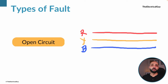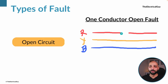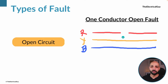Talking about open circuit — let's say we have three phases R, Y, and B, and one of the phases is broken down in between. As a result, the current will not flow beyond that point; it is stopped — it is opened. This is an open circuit fault. Here the R phase is broken down, so out of three one phase is down — this fault is called a one conductor open fault.